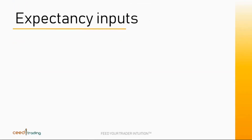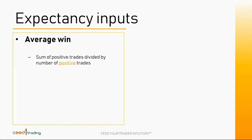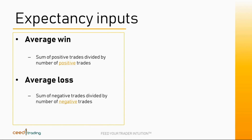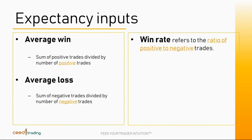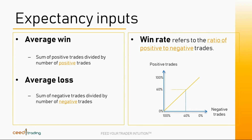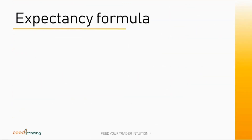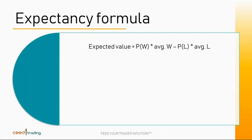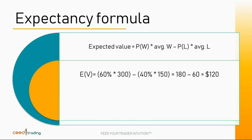The average win trade is simply the sum of positive trades divided by the number of positive trades. The average loss trade is equal to the sum of negative trades divided by the number of negative trades. The other required input is the win rate, which is the ratio of positive to negative trades. A win rate of 60% for example means that 60 out of 100 trades are positive and 40 are negative. The formula for the expectancy ratio is the probability of a win trade times the average win, minus the probability of a loss trade times the average loss. In our example, the expected return is 120.